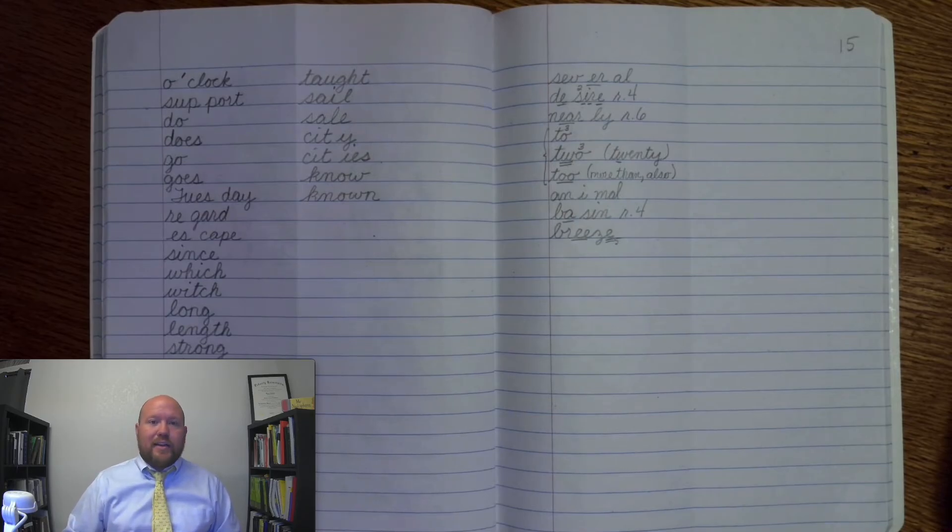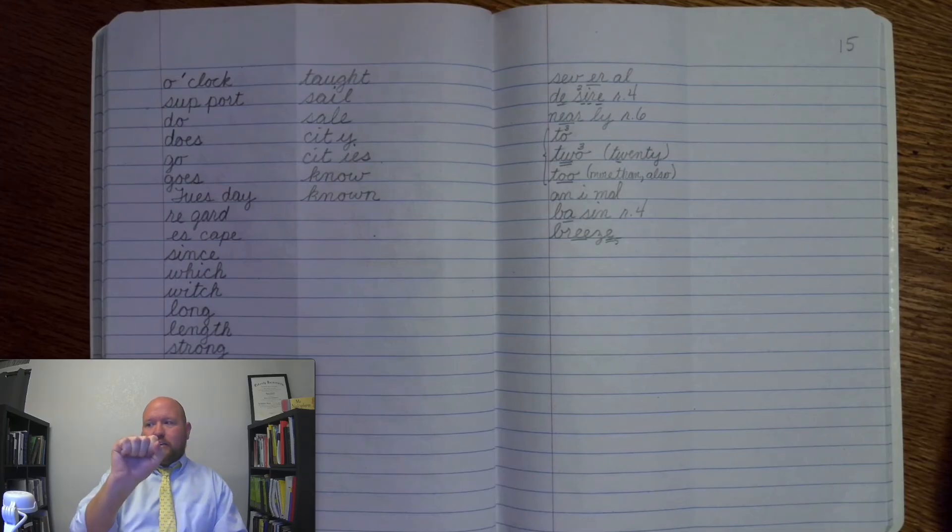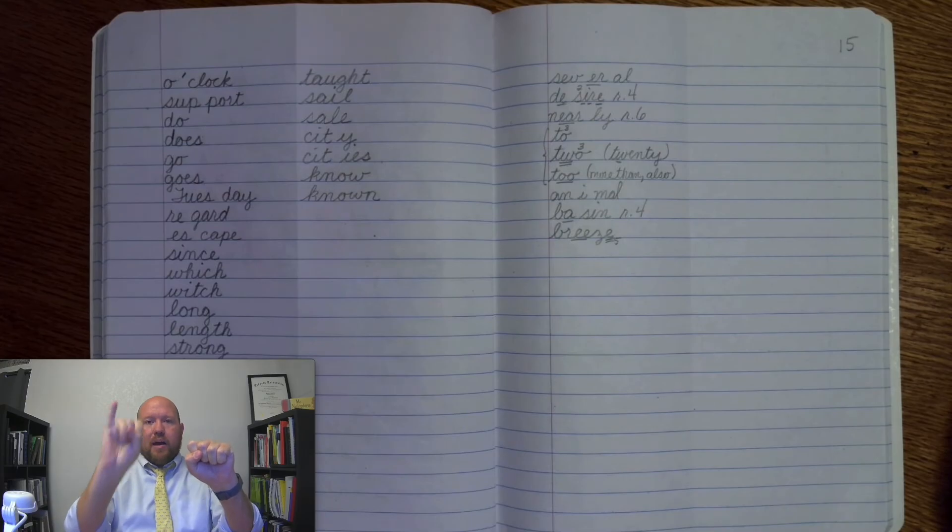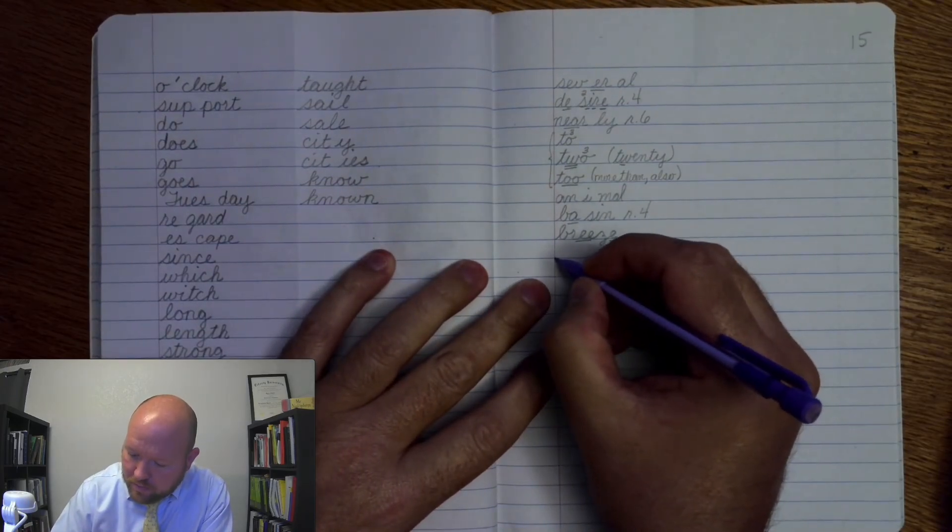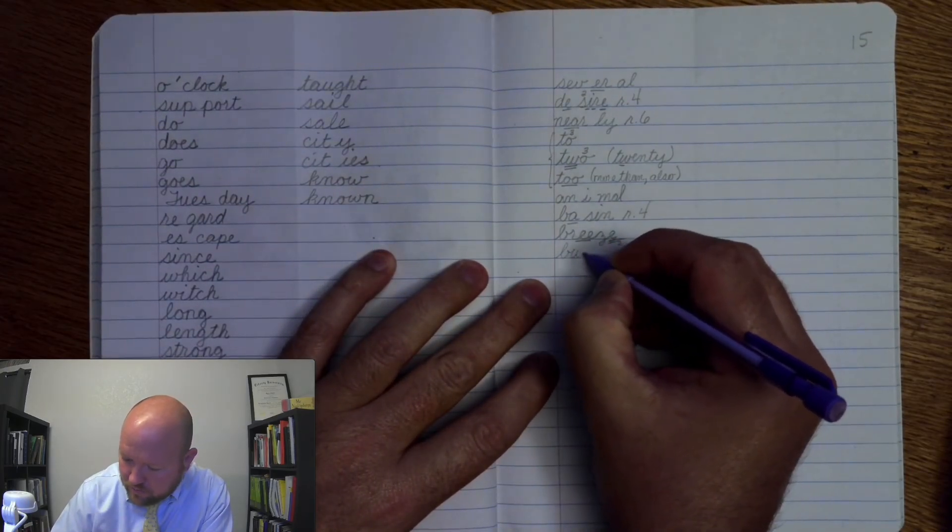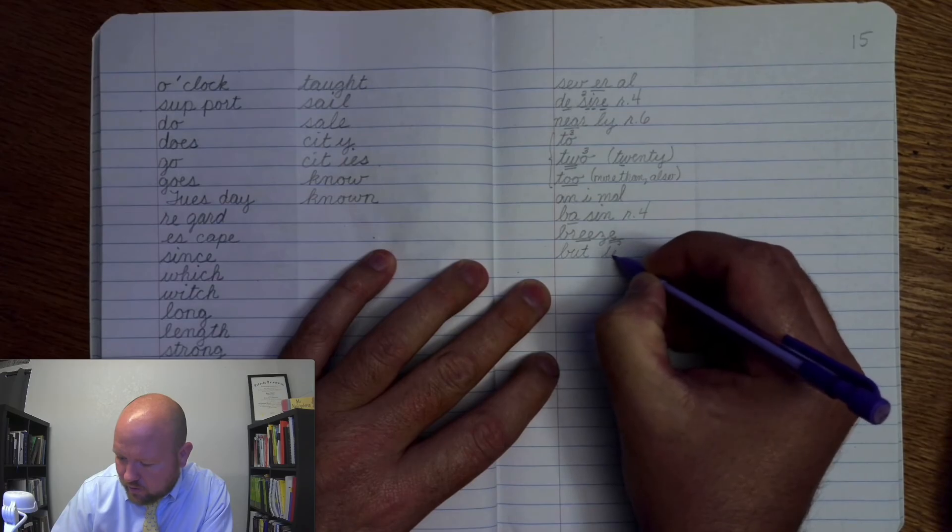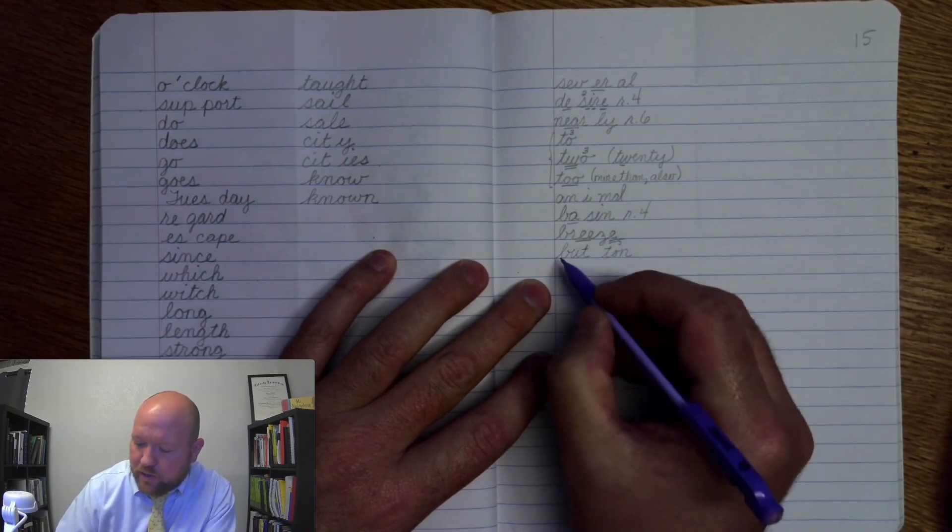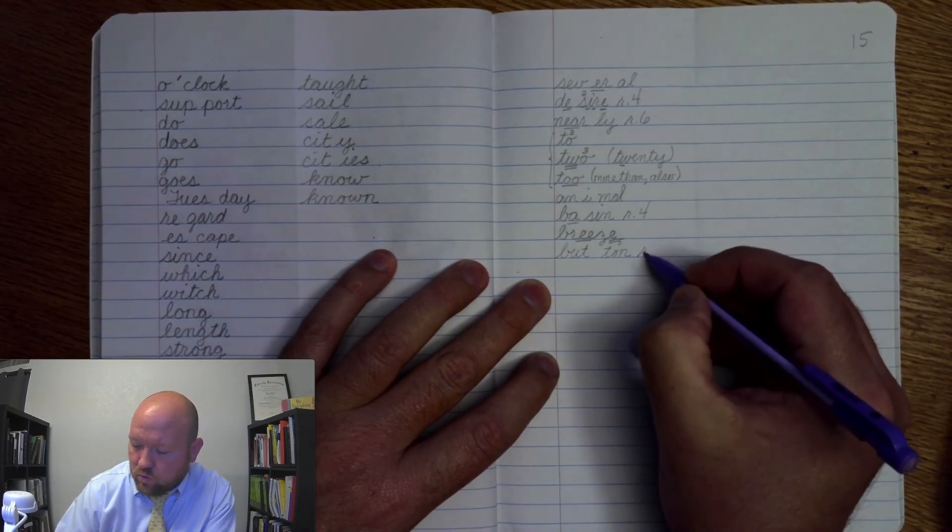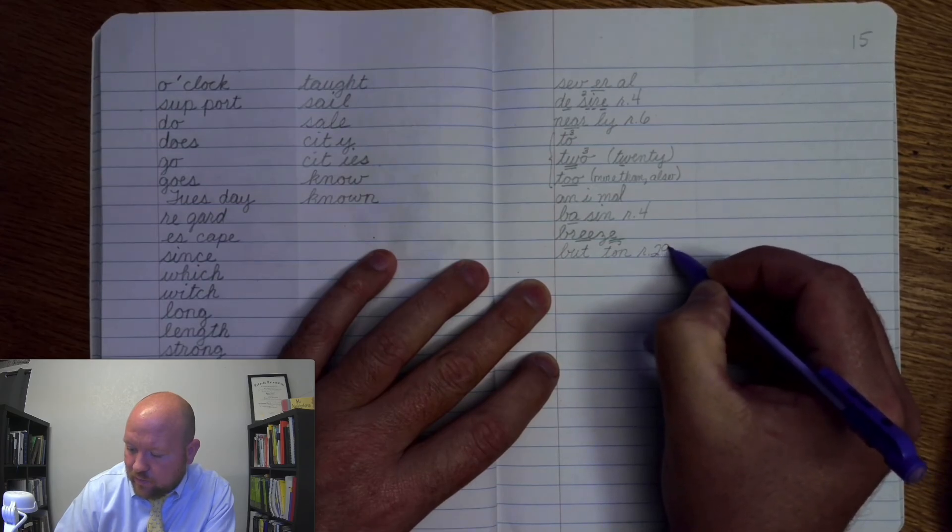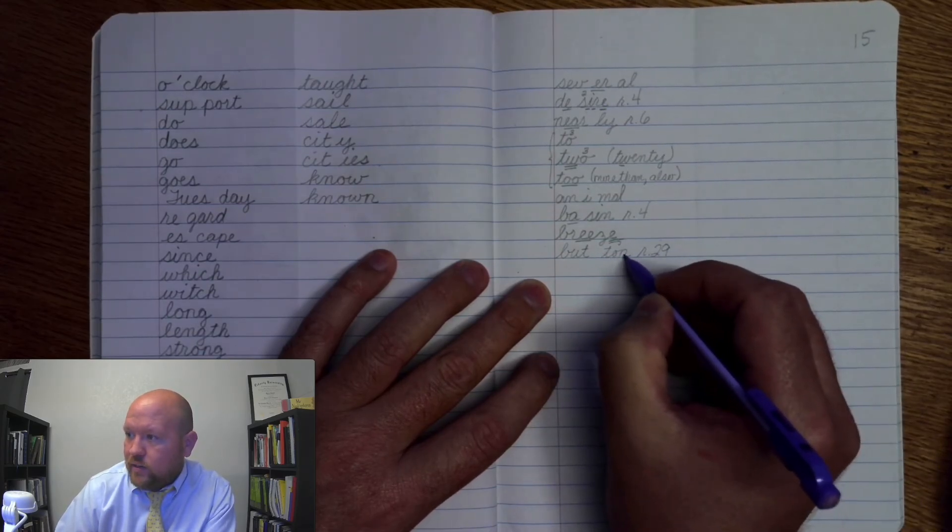The next word is button, like on my shirt there is a button. Button. Base word button: Butt-on. B-u-t-t-o-n. Button. Markings: B-u-t-t, rule 29, o-n. Button.